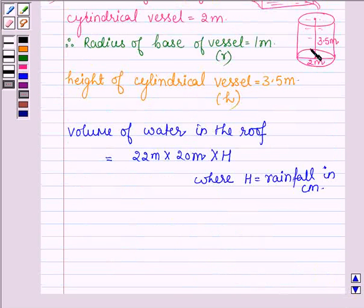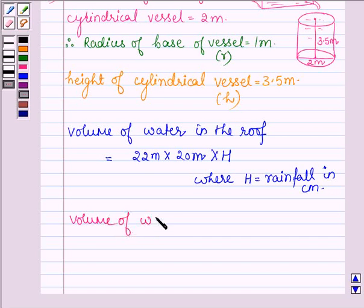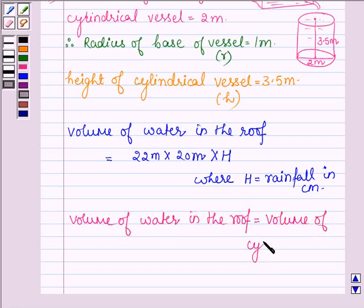This water is drained out into a cylindrical vessel, so the volume of water in the roof is equal to the volume of the cylindrical vessel.